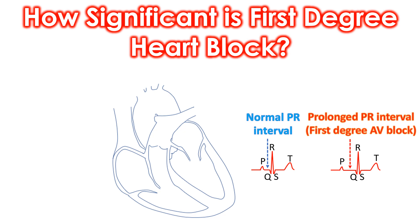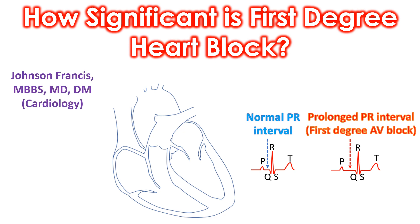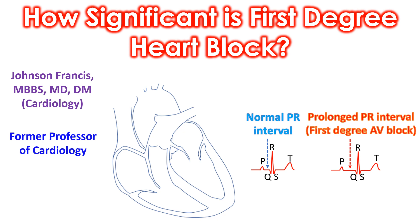First degree heart block is an abnormality in the electrical conduction of the heart noted on the ECG, the recording of the electrical activity of the heart. It is not a block in the blood vessels of the heart which we are more familiar with.